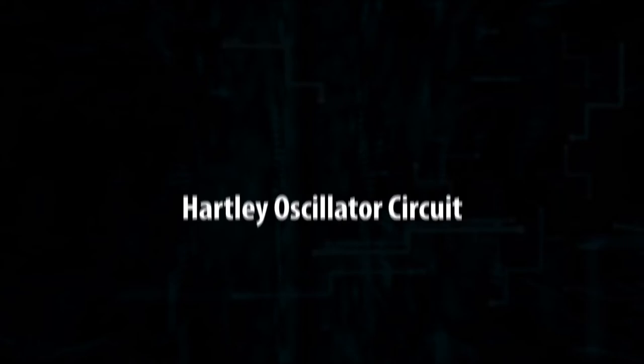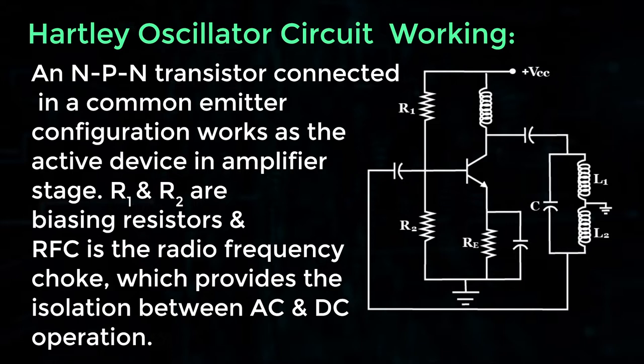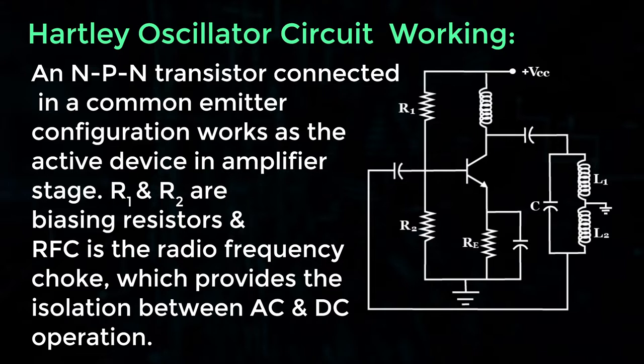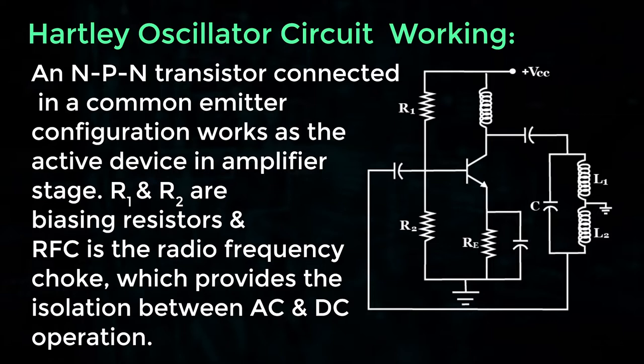Hartley Oscillator circuit and its working. An NPN transistor connected in a common emitter configuration works as the active device in amplifier stage. R1 and R2 are biasing resistors and RFC is the radio frequency choke which provides the isolation between AC and DC operation.